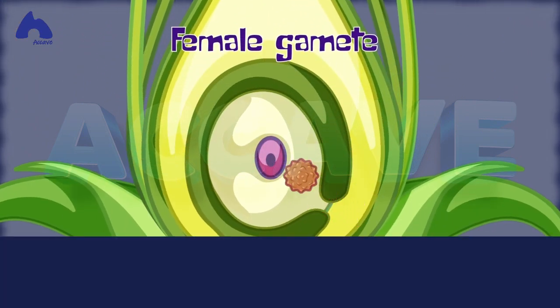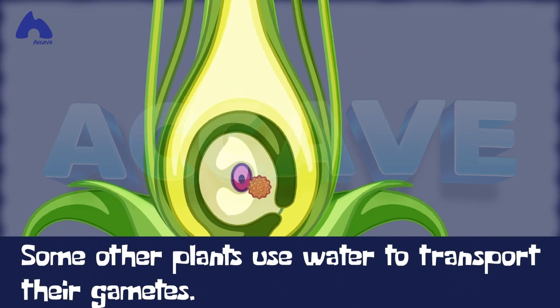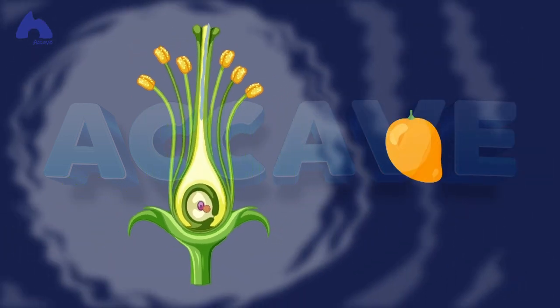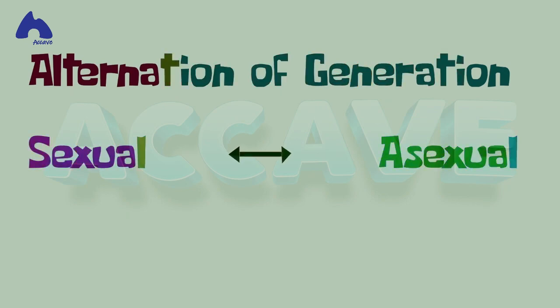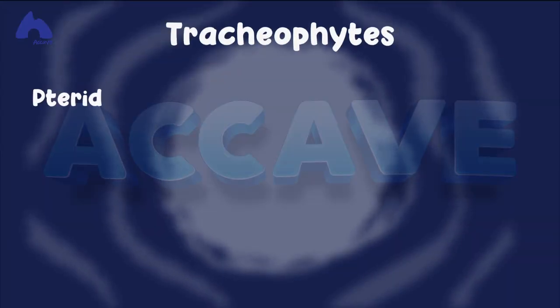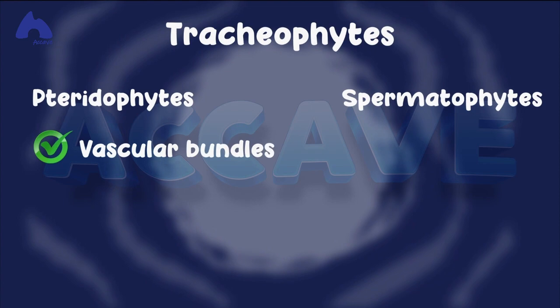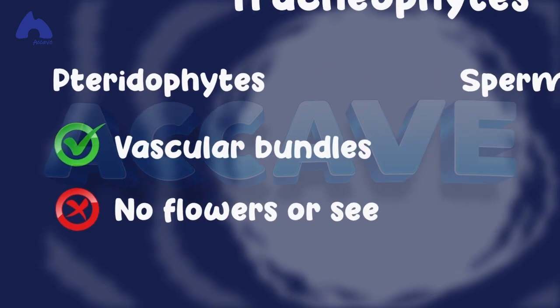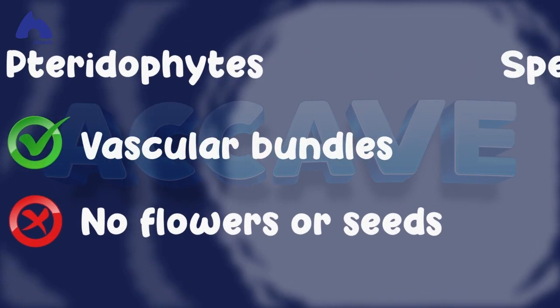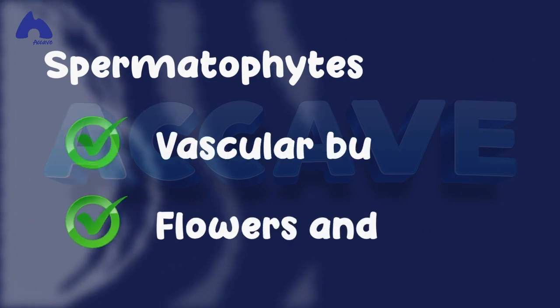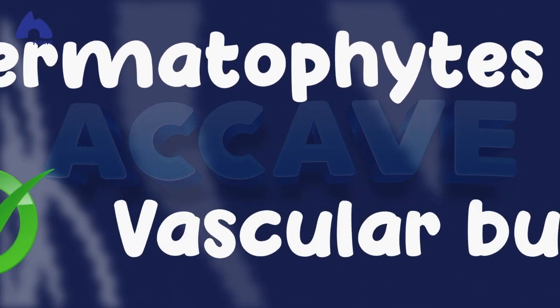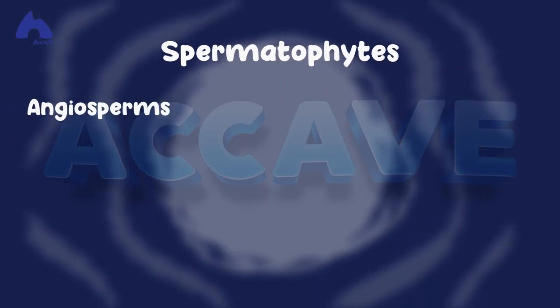They use this pollen tube instead of using water, as some other plants do. Tracheophytes produce fruits and flowers, so they also exhibit alternation of generation. Tracheophytes can be further grouped as pteridophytes and spermatophytes. Pteridophytes are plants with vascular bundles that don't produce flowers and seeds, while spermatophytes produce both flowers and seeds.